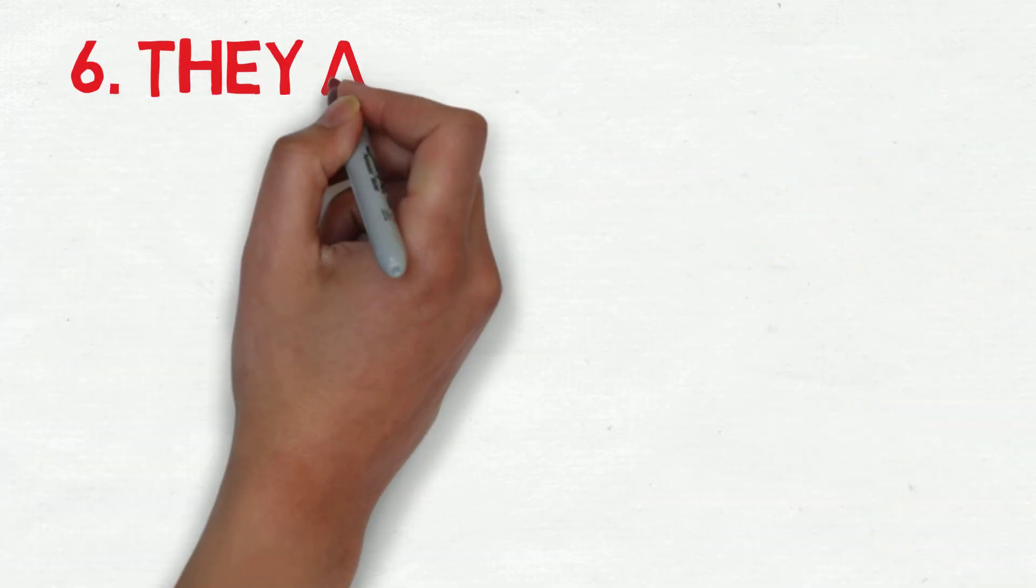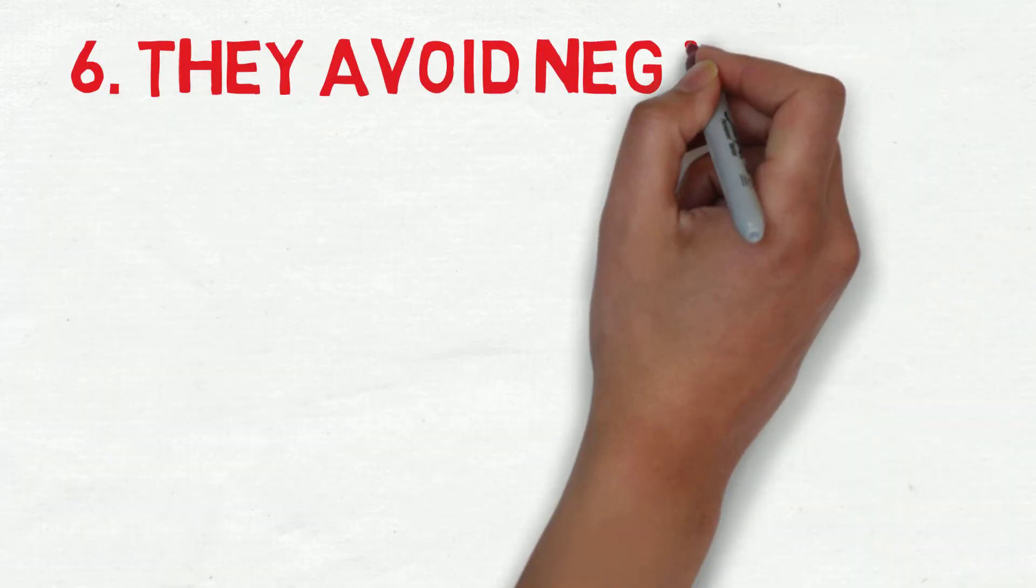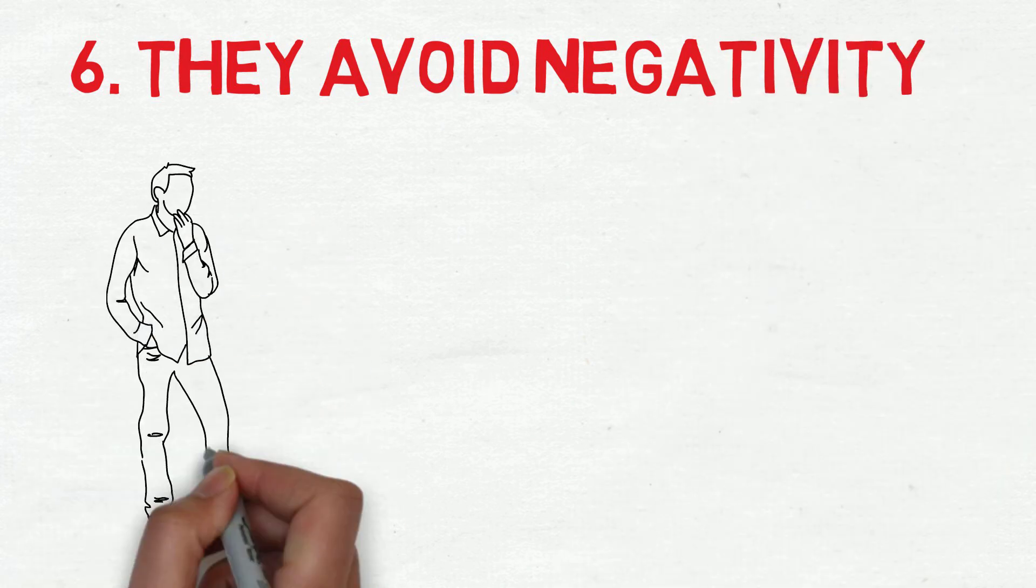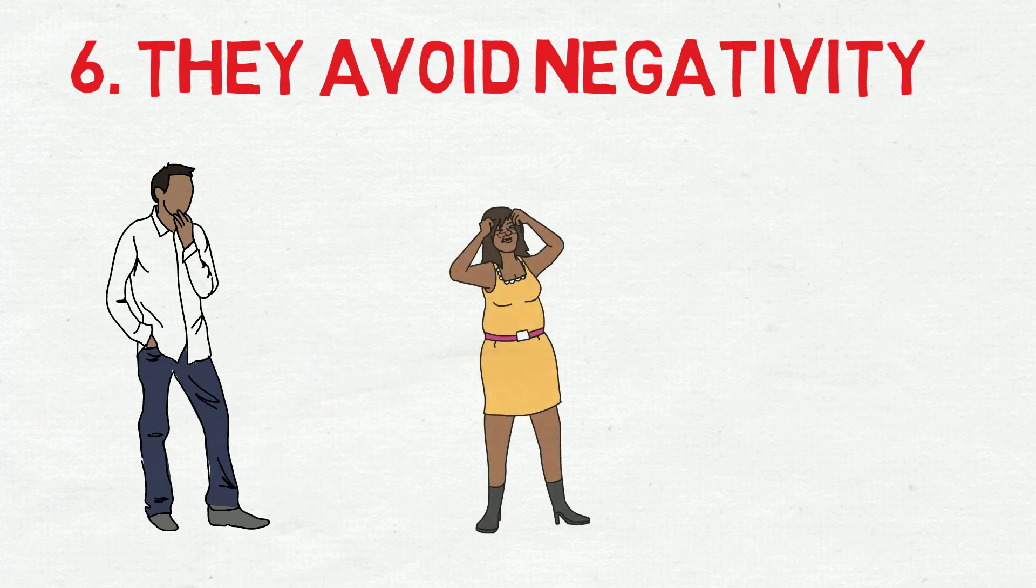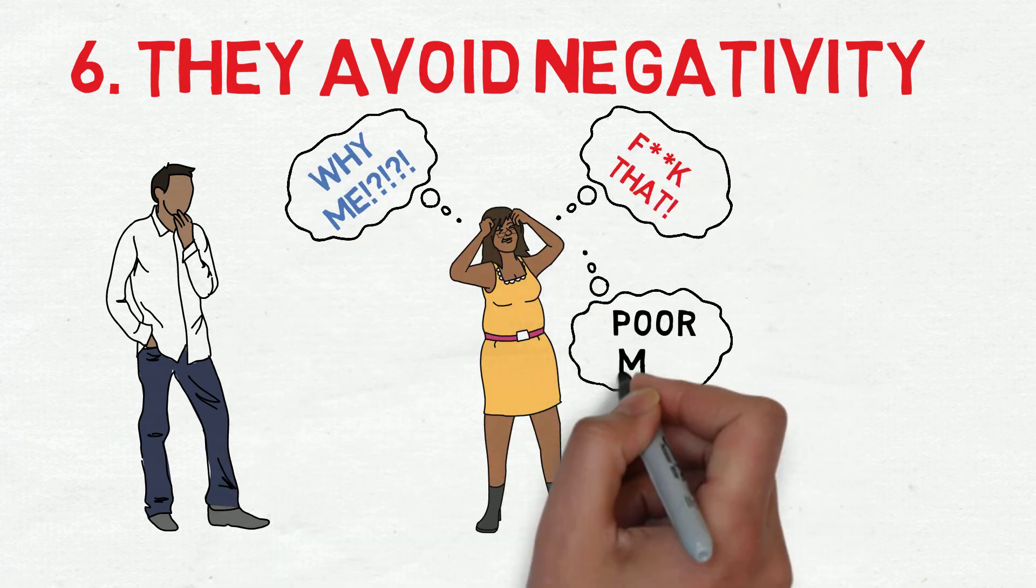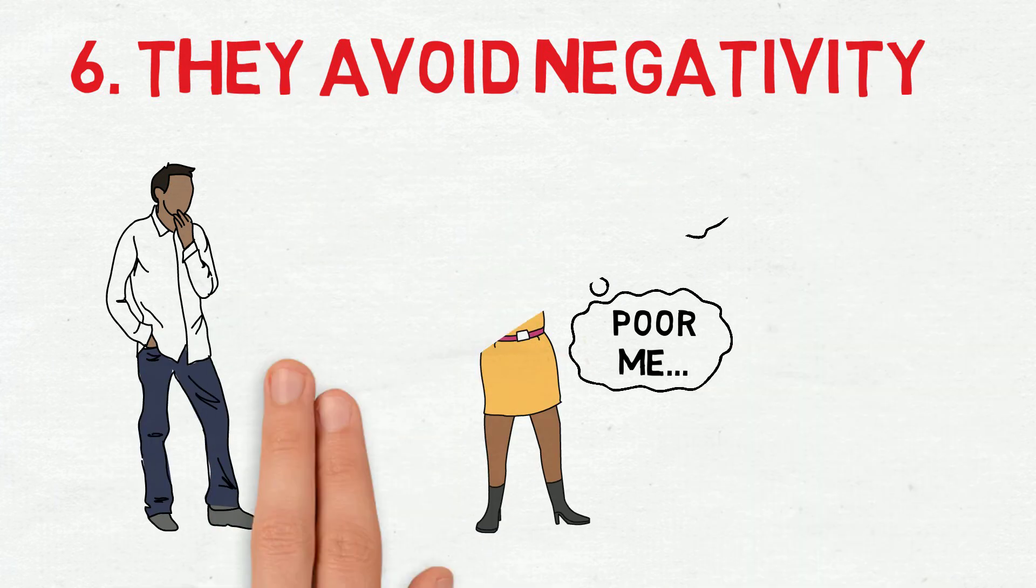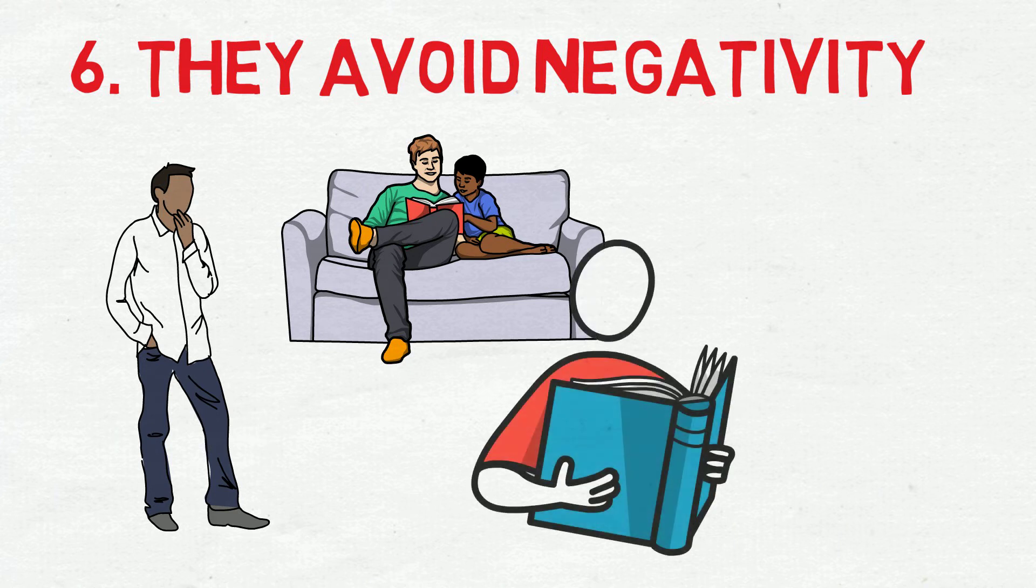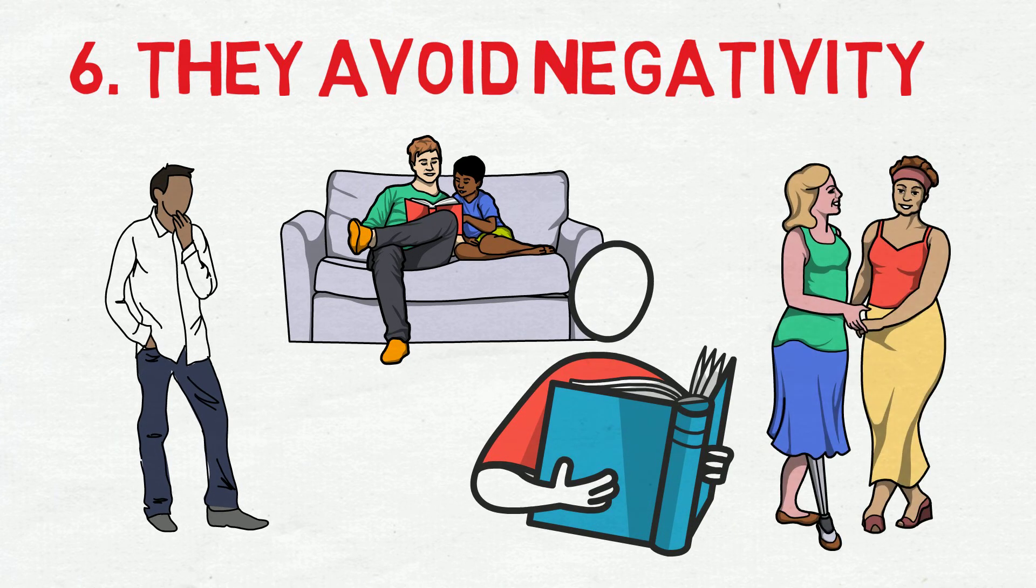Number six, they avoid negativity at all costs. This is part of the reason they are so picky with their friends. A person who is always negative, always complaining, and always playing the victim card can be a drain on your energy and positivity. Smart people avoid negative people. Smart people also keep to themselves and out of drama. A night reading, studying, or one with your favorite few close friends beats a drunken night at the bar where who knows what will happen and who will be there.